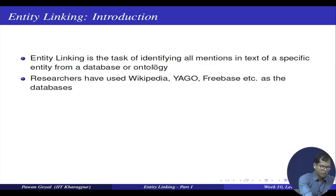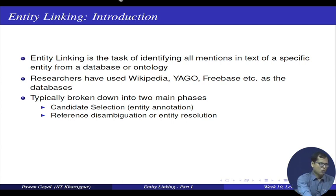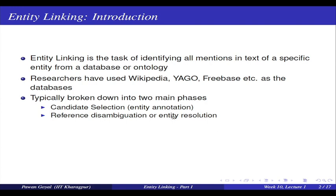A lot of different databases can be used — for example, researchers have used Wikipedia, Yago, Freebase, and others. The task of entity linking can be broken into two phases. The first phase is entity mention detection: identify from the text what are the appropriate candidate entities that should be linked. The second phase, once you've found the important entities, is to appropriately link them to the database — this is called reference disambiguation or entity resolution.